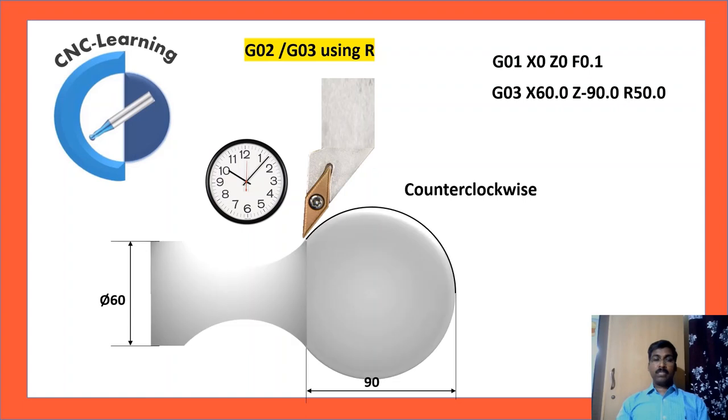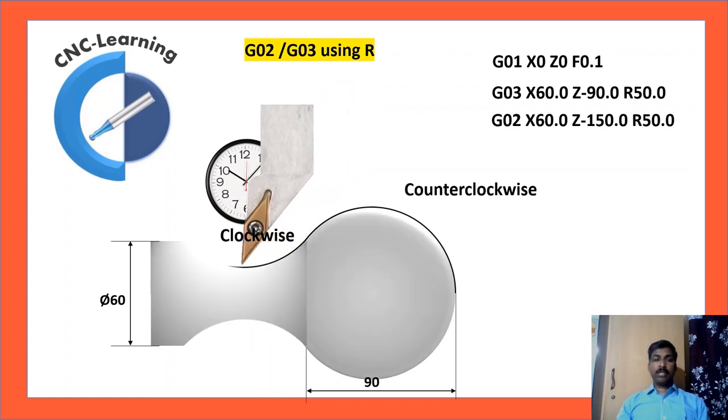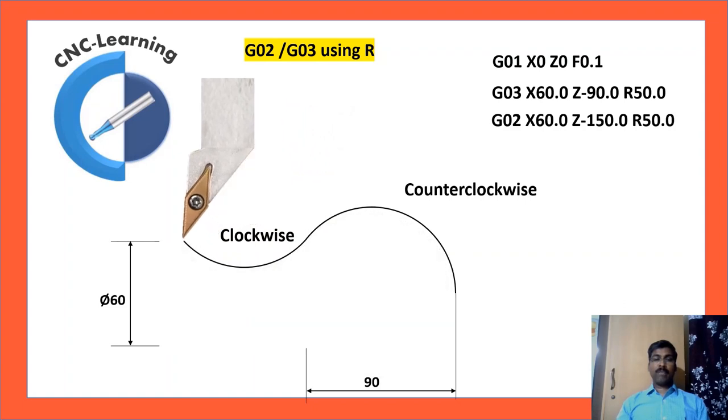Next is circular interpolation clockwise. So code would be G02 and the end coordinate X is 60, Z is minus 150 and radius is same 50. So the total code is G02, X60, Z minus 150, R50.